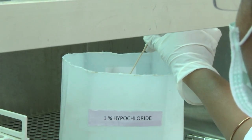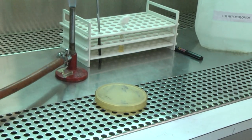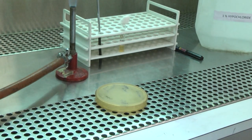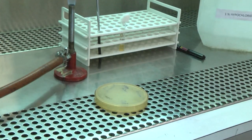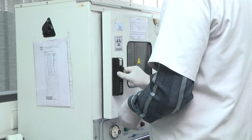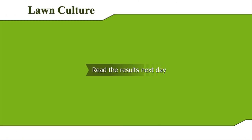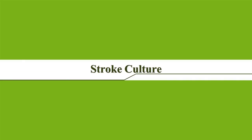Discard the swab in a disinfectant solution. Allow the plate to dry for a few minutes with the lid closed at room temperature. The antibiotic discs can now be placed on the inoculated plate using sterile forceps, sterile needle tip, or an antibiotic disc dispenser. Incubate the plate overnight at 35 to 37 degrees centigrade and read the results the next day.